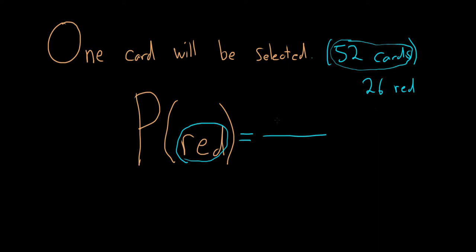So in the numerator, it's the number of ways to pick a red card. And since there's 26 of them, there's 26 ways.